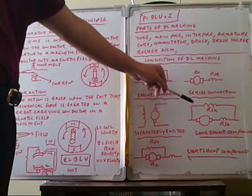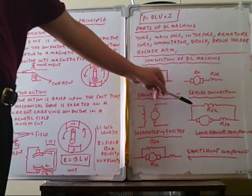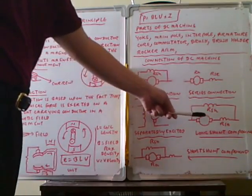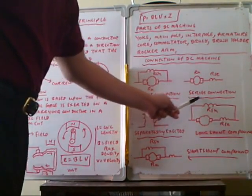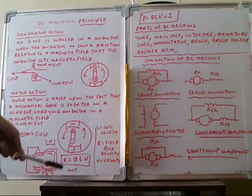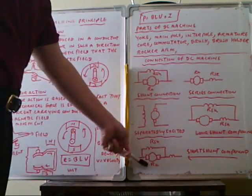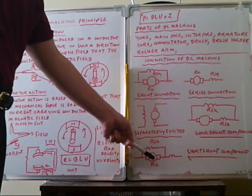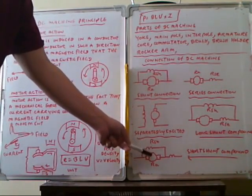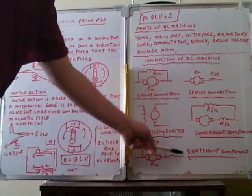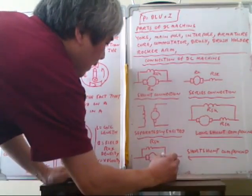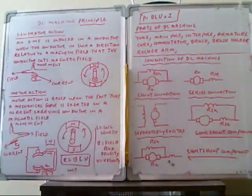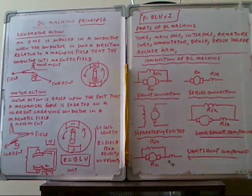This is the long-shunt compound generator. It consists of the armature, series field, and shunt field. The armature and series field are connected in series, and this combination is connected in parallel with the shunt field. For the short-shunt compound generator, the shunt field is connected in parallel with the armature only, and the series field is connected in series with the whole combination of the armature and shunt field.